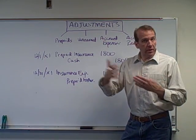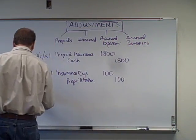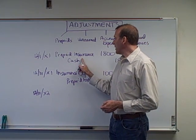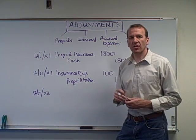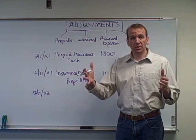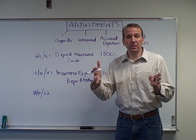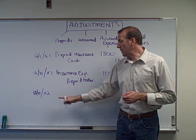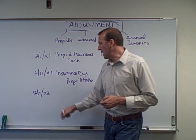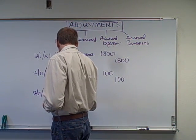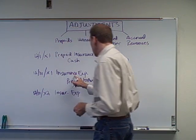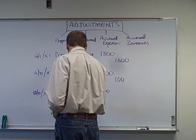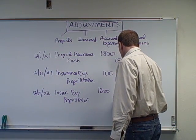For the next year, by December 31st Year 2, our Prepaid Insurance account has $1,700 balance. We've had the insurance policy for a full year, so we need to reduce it for that year. Remember, it was an $1,800 policy for 18 months at $100 per month. We used up 12 months in Year 2, so we recognize Insurance Expense for $1,200 and reduce Prepaid Insurance by $1,200.